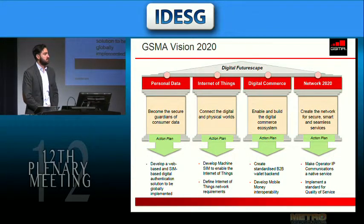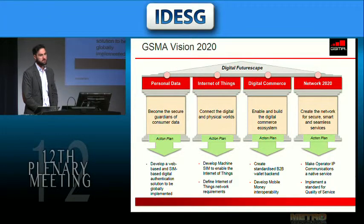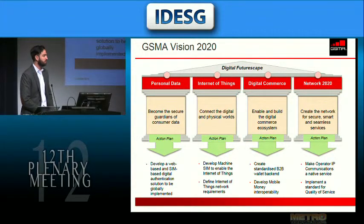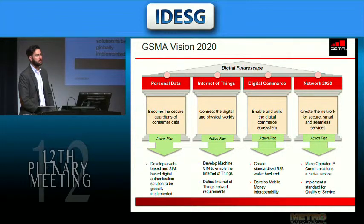GSMA is a trade association that represents over 90% of the mobile carriers globally, with over 800 members. We work with them to deploy common services, requirements, and initiatives to ensure they're adopted globally and are interoperable. We started off as a roaming agreement between European carriers in the 80s. At GSMA, we're currently going through what we call Vision 2020, where we've mapped out the future landscape of mobile. We've set up four pillars: personal data, the Internet of Things, digital commerce, and network 2020.